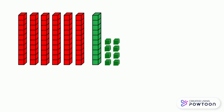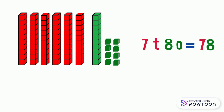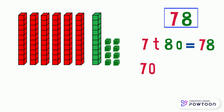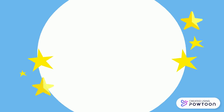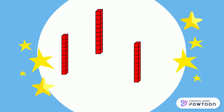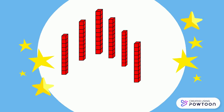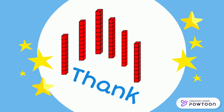There are 7 tens and 8 ones — it represents the number 78. 70 plus 8 equals 78.